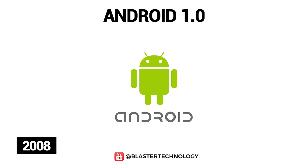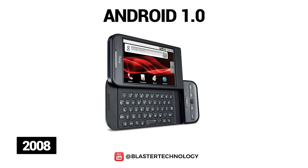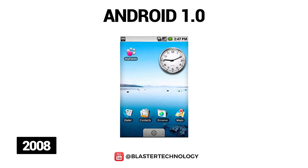The first version of Android was available on the HTC Dream smartphone in 2008. The operating system included Google Maps, YouTube, an HTML browser, Gmail, instant messaging, text messaging, MMS and more.